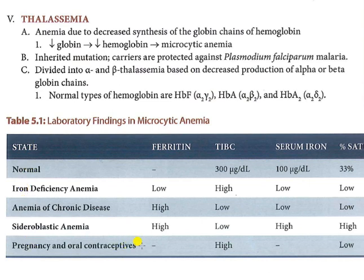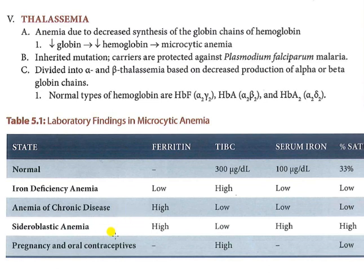Now we have a comparison table. In iron deficiency anemia, iron will be low and ferritin will be low. In anemia of chronic disease, iron will be low and ferritin will be high. In sideroblastic anemia, sideroblasts are high and ferritin will be high. Iron will be high and there will be accumulation of sideroblasts.